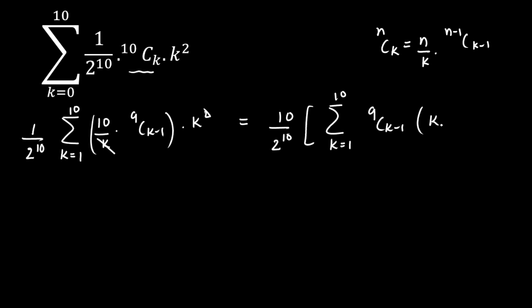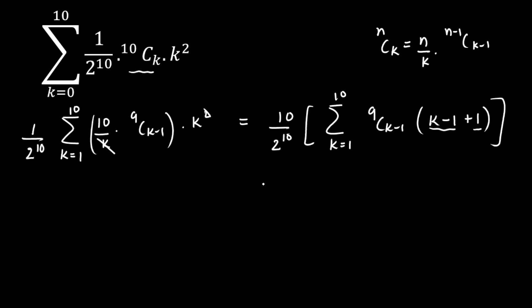Now k is still remaining. I am going to apply the formula again since I want to cancel k−1 — if I apply the formula again, k−1 will come in the denominator. So I write k as (k−1) + 1, then segregate into two parts: (k−1) multiplied by 9C(k−1), and 1 multiplied by 9C(k−1).